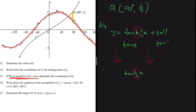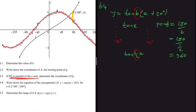The period of a tangent function is 180°/b. With b = 1/2, the period becomes 180° ÷ (1/2) = 360°, doubling the original period. This also doubles the positions of the asymptotes: from 90° to 180°, and from -90° to -180°.